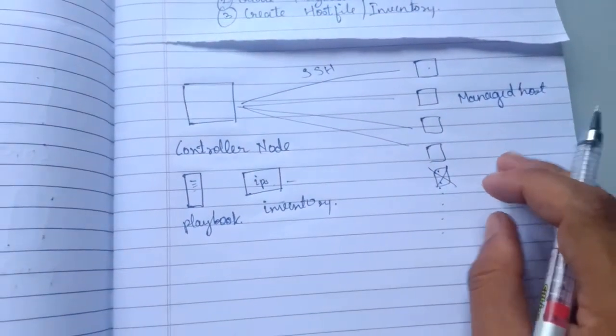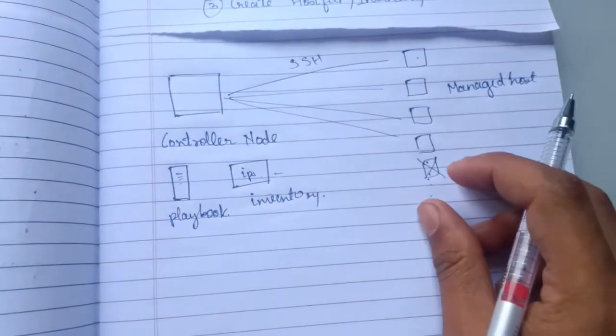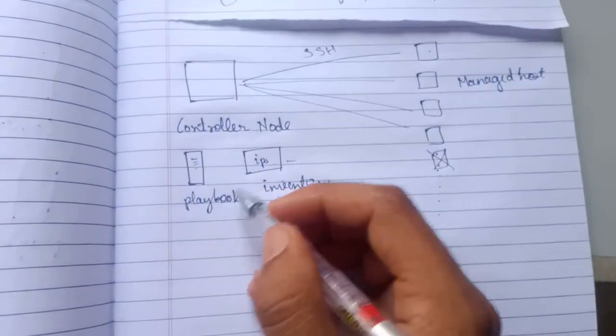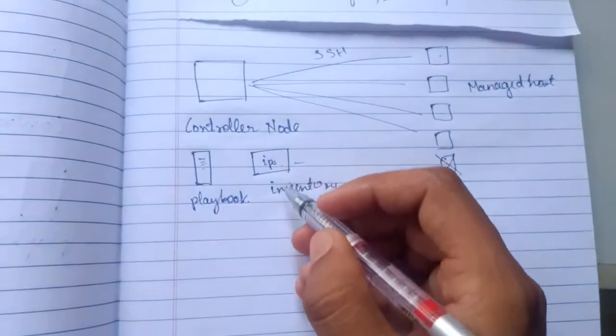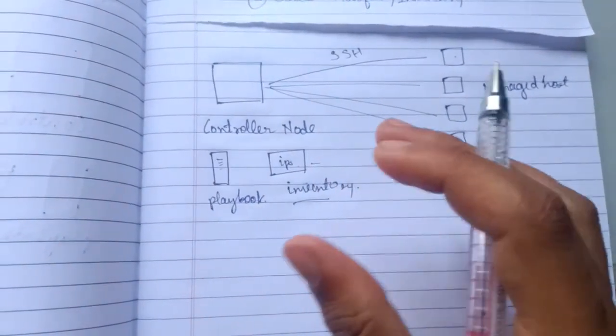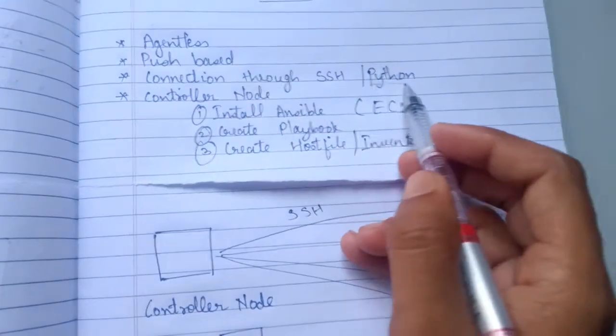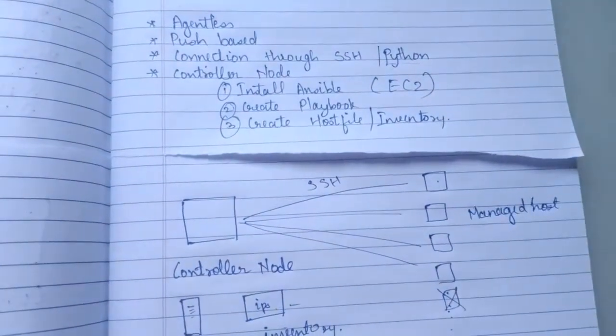And if the key pair is there, the connection is established. After the connection is established, the playbook is executed on all the host whose IPs are present in the inventory file. So it also uses SSH or Python. You can use Python scripting for advanced configurations.